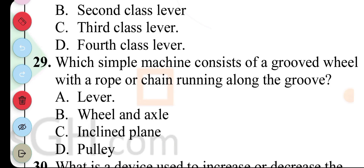Question 29. A simple machine with a rope or chain running along a groove. A. Lever, B. Wheel and axle, C. Inclined plane, D. Pulley. The answer to question 29 is D. Pulley.